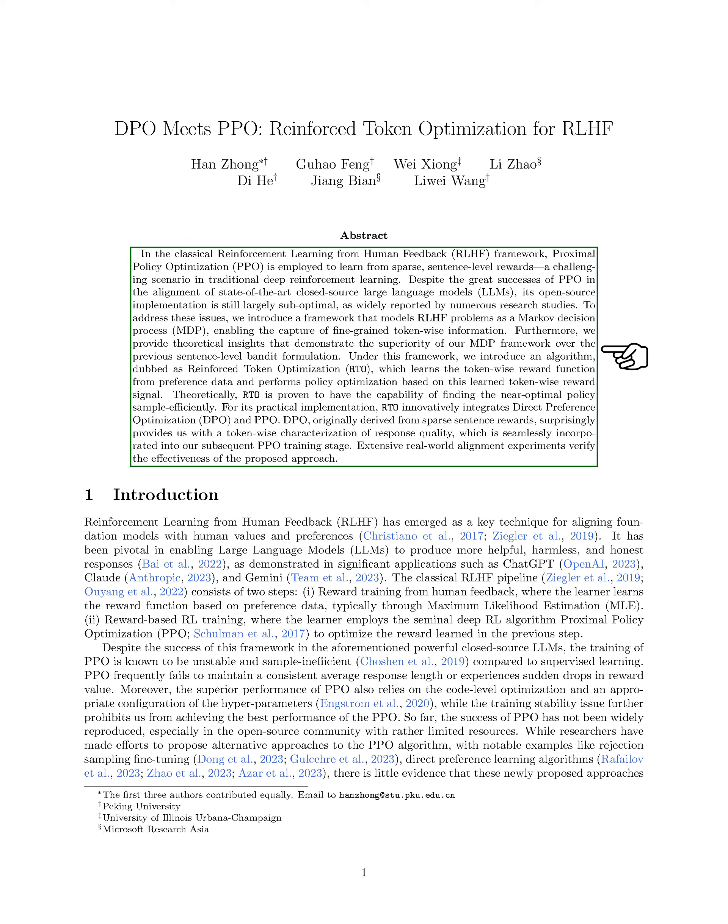The traditional RLHF process involves two main steps. First, training the model to understand human feedback and preferences, typically using maximum likelihood estimation, MLE. Second, using a deep RL algorithm called proximal policy optimization, PPO, to optimize the learned reward. However, PPO training can be unstable and inefficient compared to supervised learning, leading to inconsistent performance and challenges in achieving the best results.